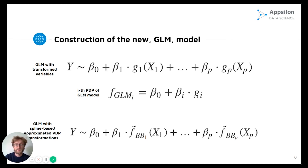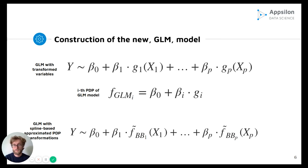In our approach, we decided to approximate PDPs before using them as transformation functions. The reason was to make the model smoother. Furthermore, we found that this gives good properties to the final GLM model in terms of prediction accuracy.